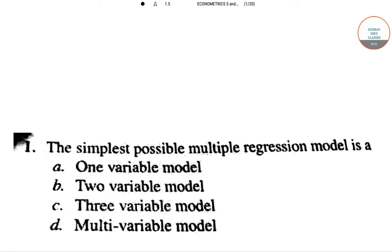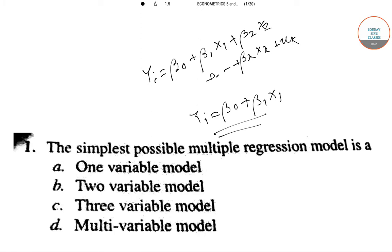What do we mean by multiple linear regression model? Suppose yi is dependent on beta0 plus beta1 x1 plus beta2 x2 dot dot beta k xk plus the error term. Now in this case the simplest possible form will be yi beta0 plus beta1 x1. So the simplest possible form will be the two variable model which is yi and xi. So in that case, the two variable model is the correct answer.